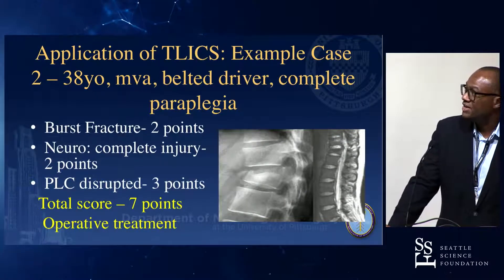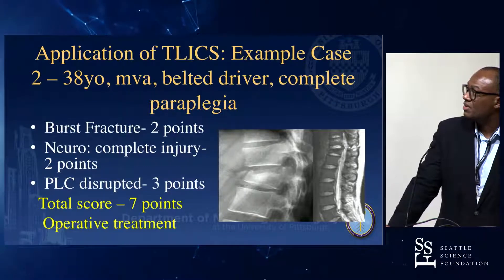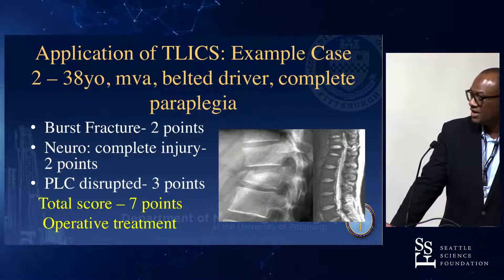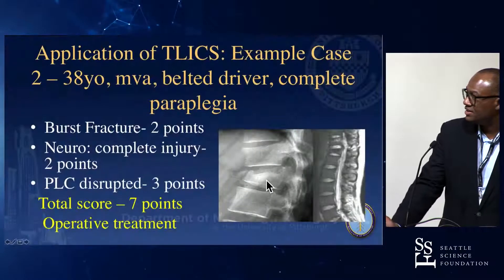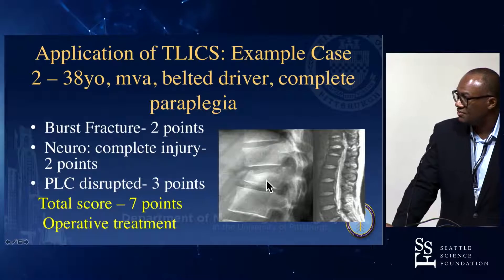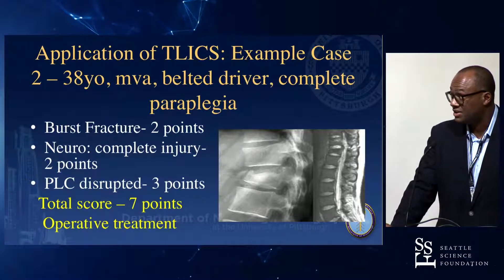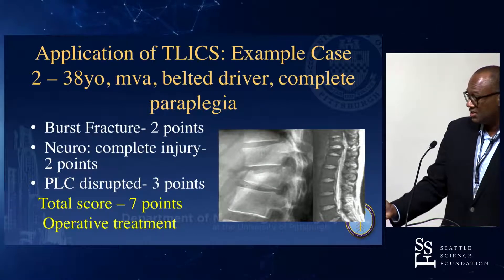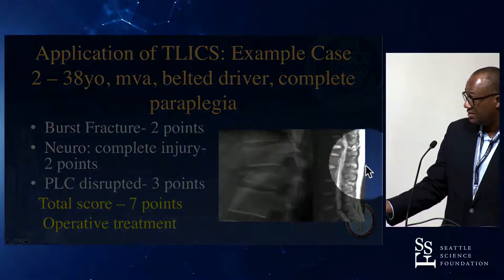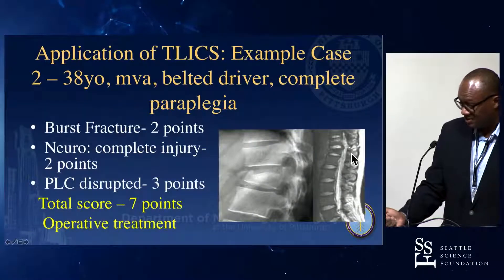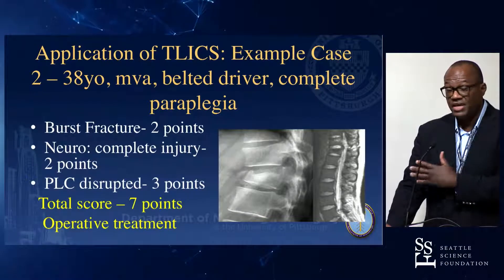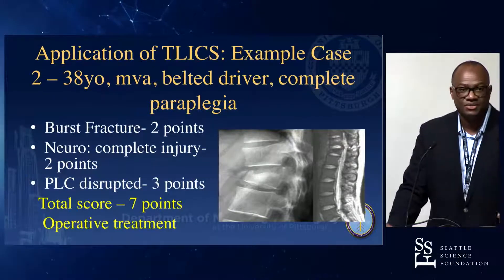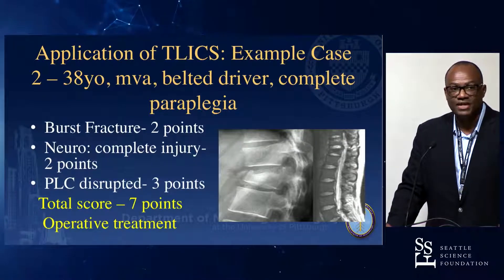Similarly, you have a 38-year-old belted driver with complete paraplegia. Already you have two points for the burst fracture — pretty obvious. And you have a complete injury, so that's four points. The PLC is disrupted, best examined by MRI, so that gets him three points. Seven points total — operative treatment. You look at this and you're like, yeah, that needs to go to surgery. You don't need a score for that.